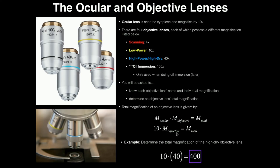Let's look at an example. We want to determine the total magnification of the high-dry objective lens. The individual magnification of the high-dry lens is 40 times. To calculate its total magnification, I take 40 times and multiply it by 10 for the ocular — 10 times 40 is 400. So the total magnification of the high-dry objective lens is 400. Another example: the total magnification of the oil immersion lens would be 100 times 10, or 1,000.